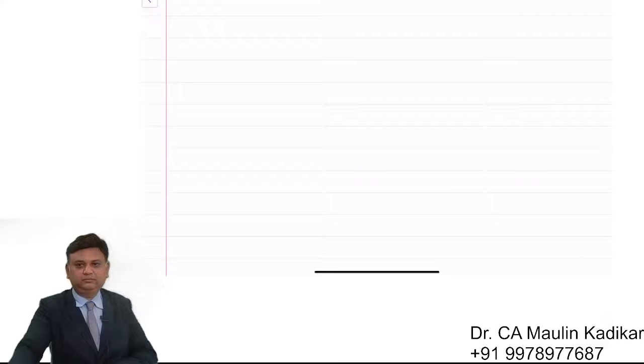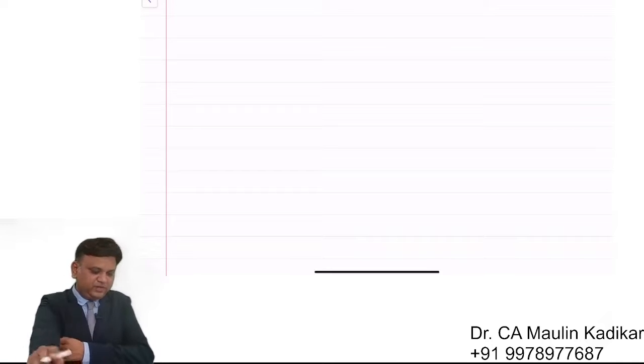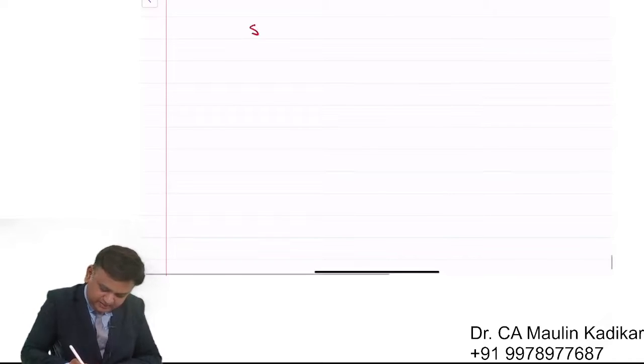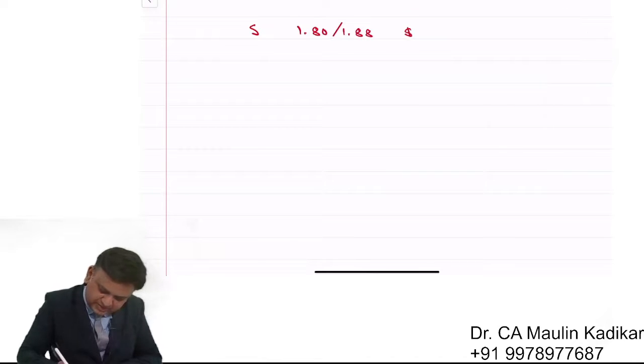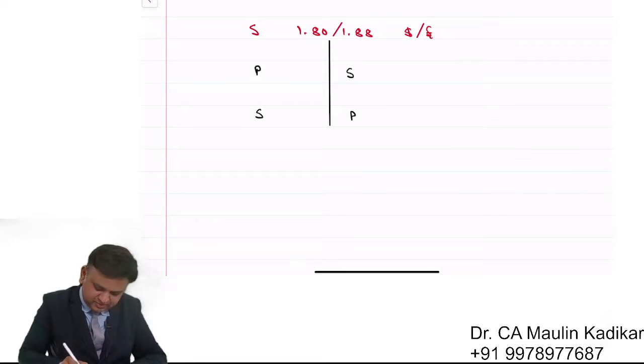Friends, question is: exchange rate is 1.80/1.88 dollar per pound, is a direct quote. First we will do bifurcation of exchange rate. What will we write? P $ £ $ £, dollar pound, dollar pound, we will write like this.